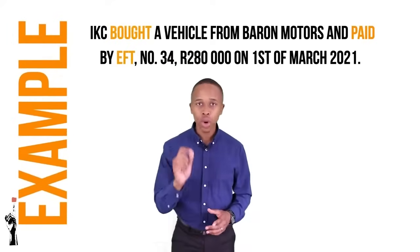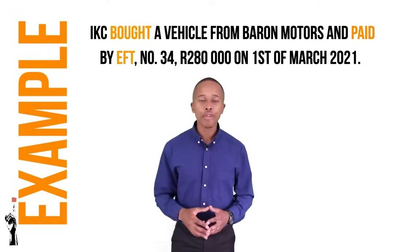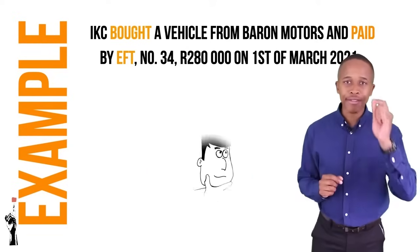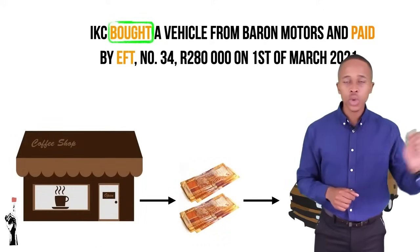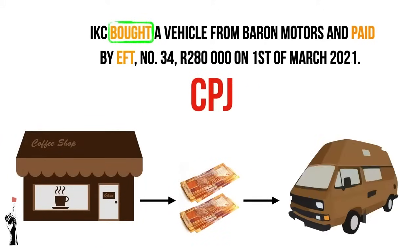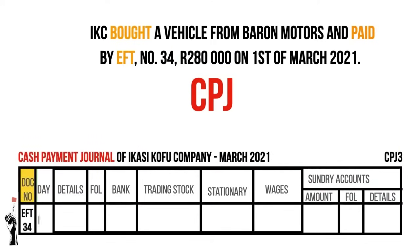IKC bought a vehicle from Barron Motors via EFT number 34 for 280,000 Rand. Let's evaluate and break down the transaction. IKC bought something, so money is leaving the business — this is recorded on the CPJ. The method of payment is EFT number 34 and the amount is 280,000 Rand. We enter the EFT number in the first column, then the date — the 1st of March — then the name of the payee. The amount is recorded in the bank column. Since there is no dedicated column for vehicles, it should be recorded in the sundry accounts column, which is where unlisted transactions are placed.